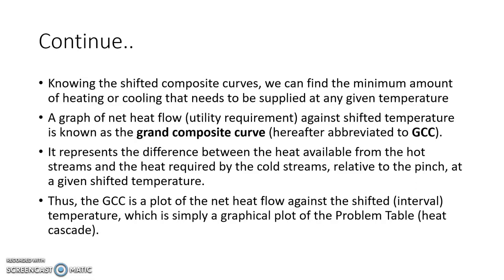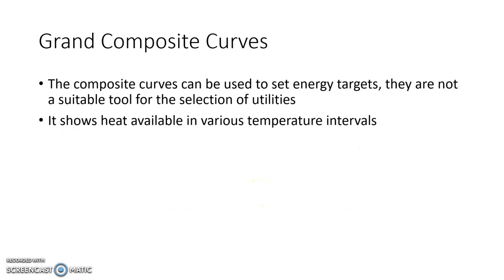A graph of net heat flow — that is, the utility requirement of the cascade — against the shifted temperature is known as the Grand Composite Curve. In the Problem Table Analysis, the last column shows the net heat flow starting from minimum hot utility to minimum cold utility, with a zero in between indicating the pinch point, as a function of shifted temperature in the first column. Plotting that gives the Grand Composite Curve or GCC. It represents the difference between heat available from hot streams and heat required by cold streams relative to the pinch point at a given shifted temperature.